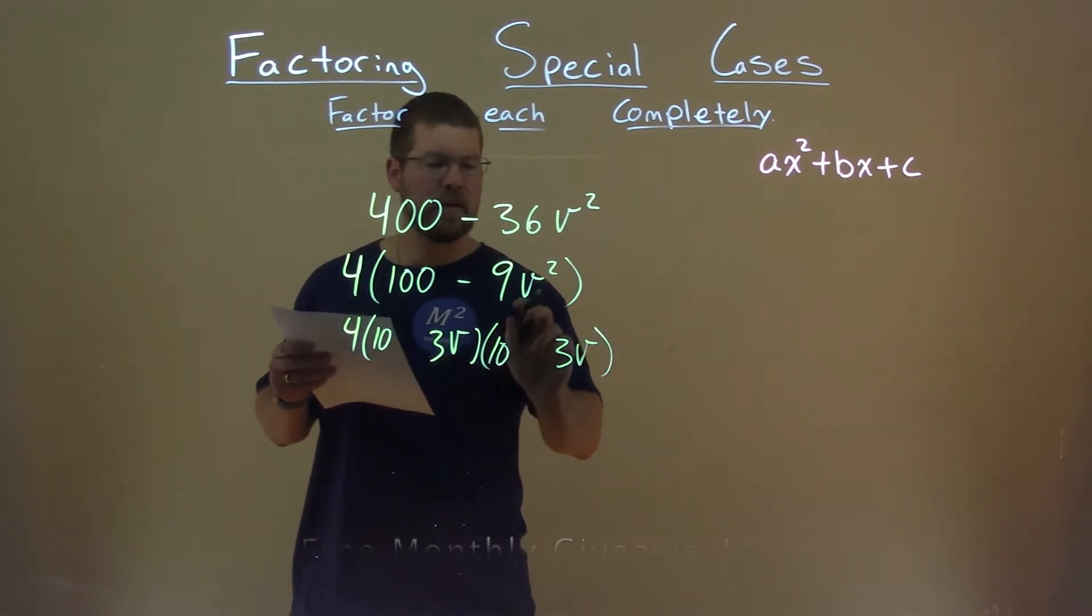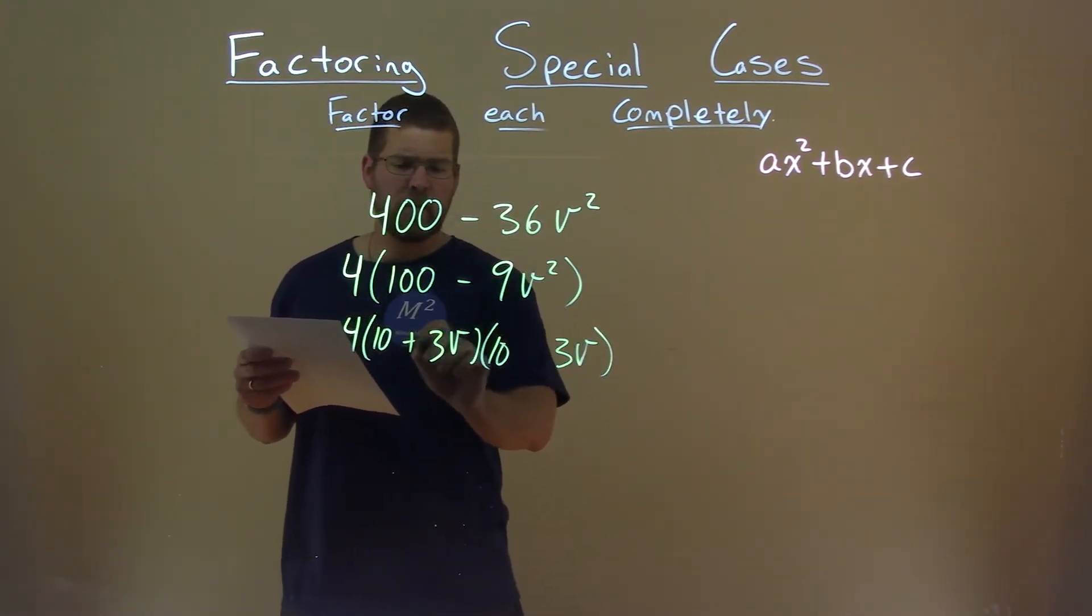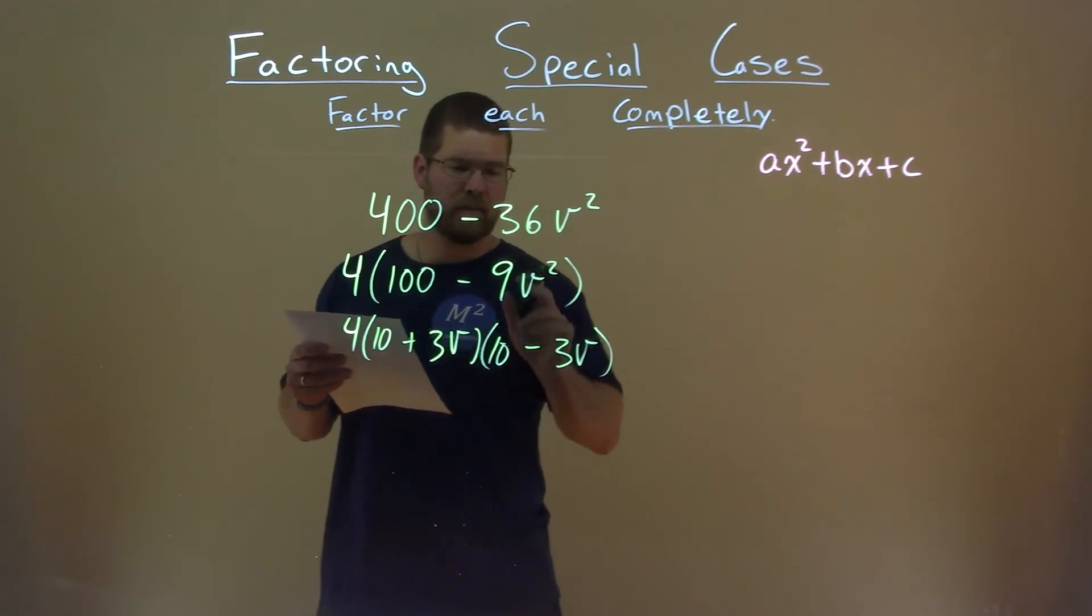3V times 3V gives me 9V squared. But we need a negative 9V squared. So if one's positive and one minus, that gives us a negative 9V squared.